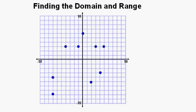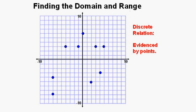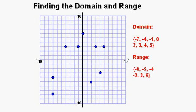I hope this helps you remember. Let's take a look at this relation. We have points scattered throughout all four quadrants. This relation is called a discrete relation because it exists at specific points and does not span intervals. The domain is all the x values of the points, and the range is all the y values of the points.